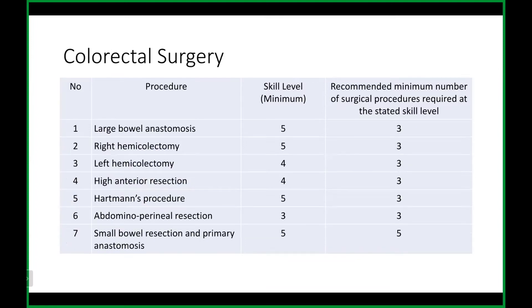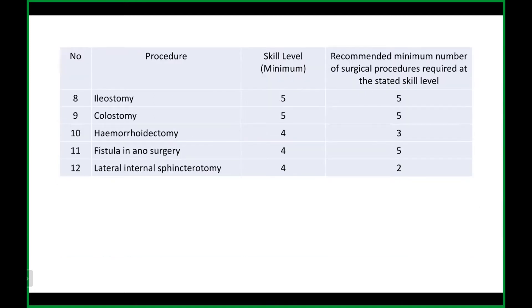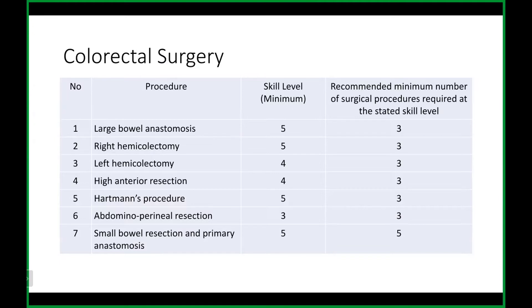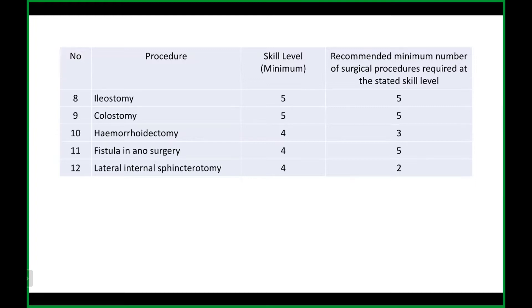For colorectal surgery: reversal of stoma can be considered as large bowel anastomosis under supervision. Right hemicolectomy — you're supposed to do it independently, but most will be supervised. High anterior resection is understandable if you don't do it. APR and assisting APR are very important. Small bowel anastomosis and primary anastomosis should be independent now. Please have some small bowel resection anastomosis — it's very embarrassing to come to fourth year and never have done one. Ileostomy, colostomy, and hemicolectomy — this full list can be obtained later.